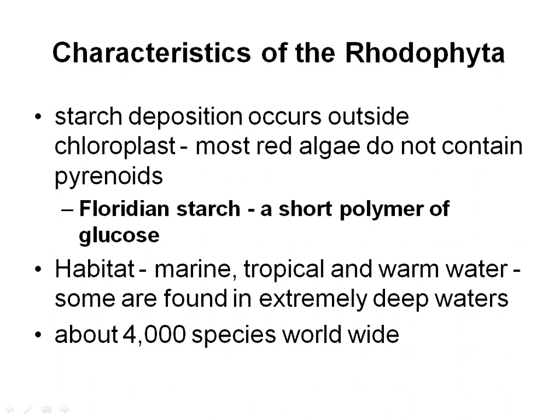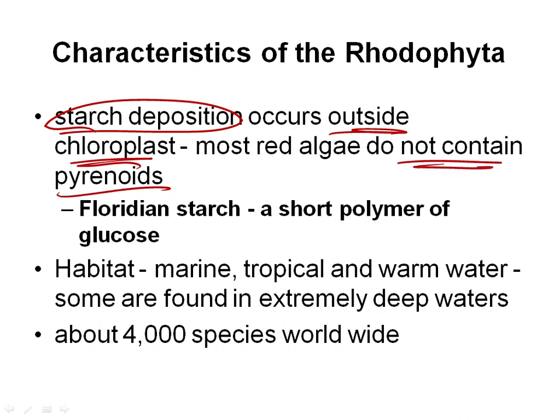Another difference between Chlorophyta and red algae is the site of starch deposition. In red algae, it's outside the chloroplast. In green algae and higher plants, it's always inside the chloroplast. The red algae do not produce starch inside the chloroplast, and in general they don't have a pyrenoid — especially the more complex ones. So no pyrenoids, and starch production is outside the chloroplast.